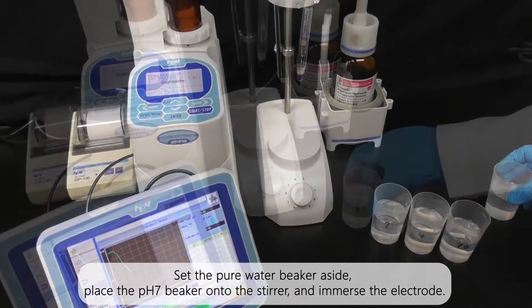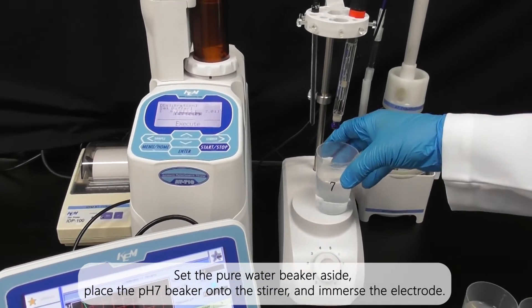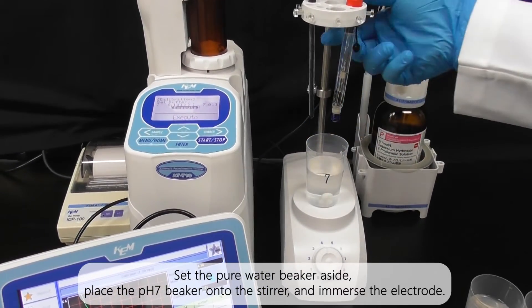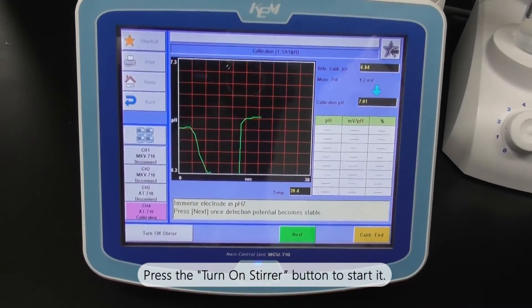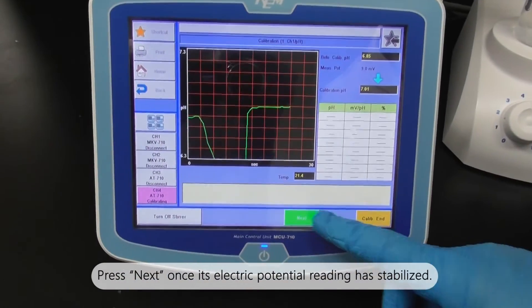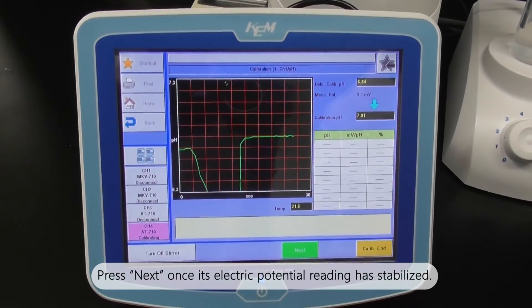Raise the electrode and wipe its tip lightly to remove moisture. Set the pure water beaker aside. Place the pH 7 beaker onto the stirrer and immerse the electrode. Press the turn on stirrer button to start it. Press next once its electric potential reading has stabilized.